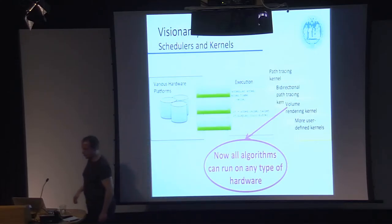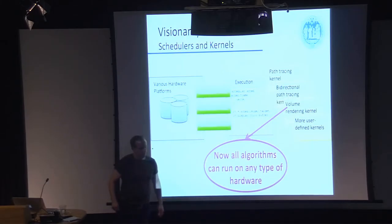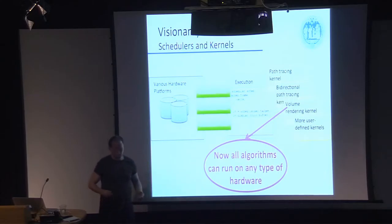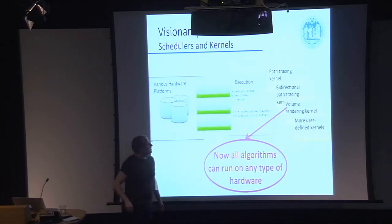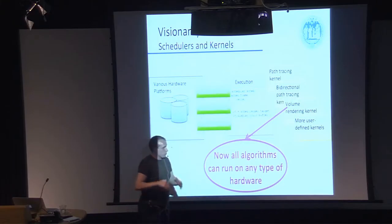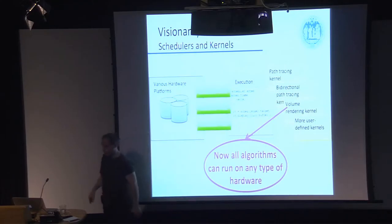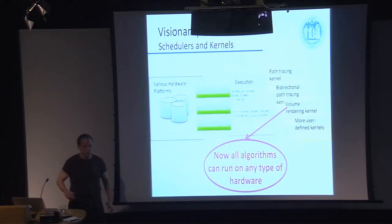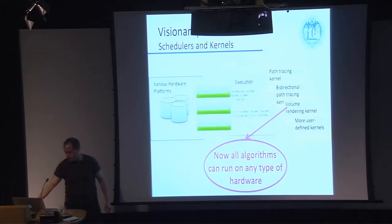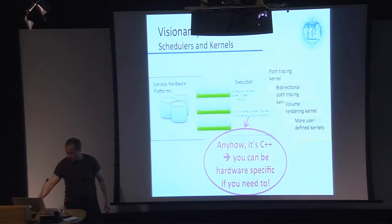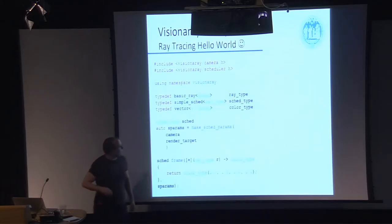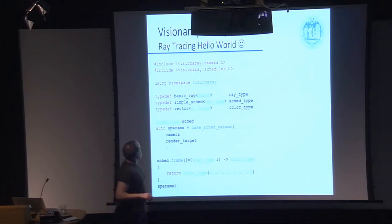When I started to work at the institute a few years ago, it was my job to parallelize direct volume rendering, which I did with a GPGPU program. Then a few years later it was my job to parallelize a path tracing algorithm, and I had to do all the parallelization once again. If I could have written a Visionary kernel at the time, I could simply have retargeted the algorithm using an existing scheduler.